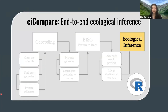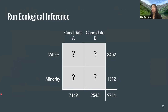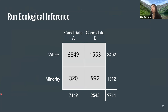With all that work done, we can actually run our ecological inference. We have that table with unknown values — the question marks — and we can now fill them in to figure out the proportions for each racial group voting for a certain candidate. Once we run EI, we can see that the majority of white voters prefer candidate A, around 7,000, and the majority of minority constituents prefer candidate B.